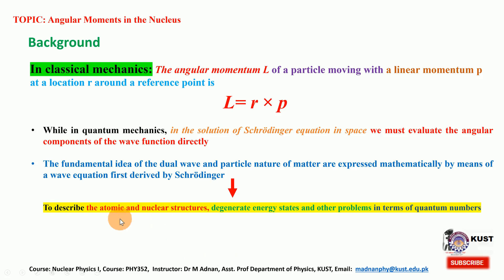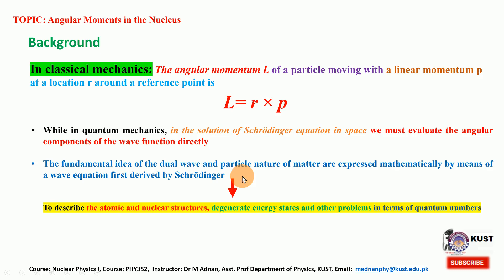In quantum mechanics, angular momentum plays a central role in understanding the structure of atoms and other quantum problems that possess rotational symmetry. Like other observable quantities, angular momentum is described in quantum mechanics by an operator - in fact a vector operator similar to the momentum operator. However, unlike the linear momentum operator, the three components of the angular momentum do not commute, as you have already discussed in detail in your quantum mechanics course.